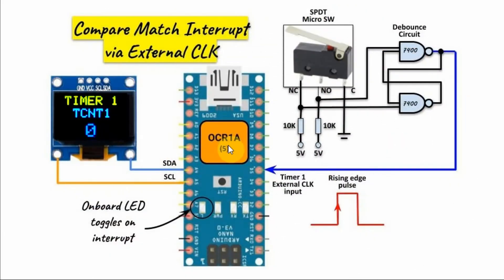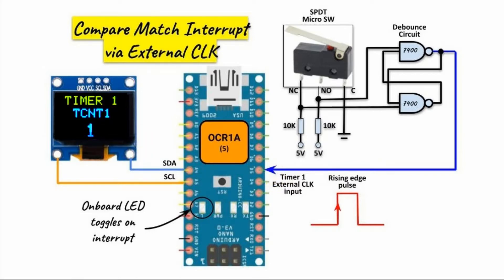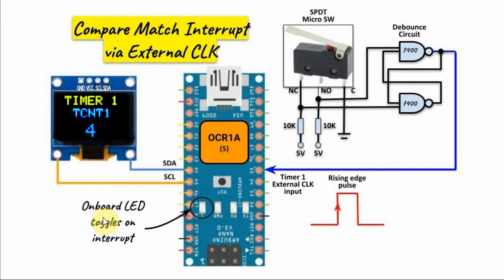In the OCR1A register, which is the output compare register of Timer 1, we store a value of 5. So when there is a rising edge pulse coming into pin D5 of the Arduino, the internal counter of Timer 1 will be incremented by 1. When this value exceeds the value in the OCR1A register, the internal counter resets to 0 and we get a compare match interrupt, which causes the onboard LED to toggle.